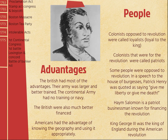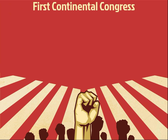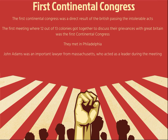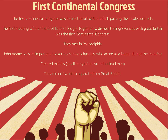The First Continental Congress — just to review — was a direct result of the British passing the Intolerable Acts. Twelve out of thirteen colonies got together and met in Philadelphia. John Adams was an important lawyer from Massachusetts who acted as a leader during this meeting. They created militias — untrained, unled men who were angry and ready to fight. They did not want to separate from Great Britain at this point. They just wanted to work things out — they were fighting, but they did not want a divorce.